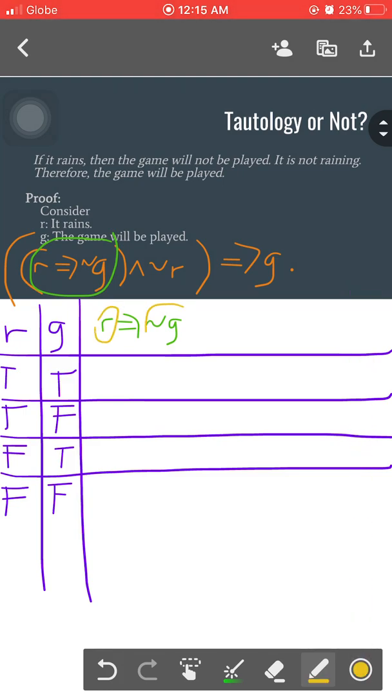We have a column for r, but we don't have yet a column for not g. This gives us a hint that we are not ready yet for this proposition because we need to have a column for not g.